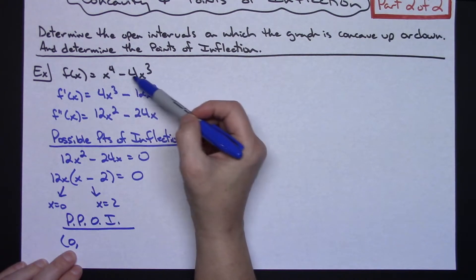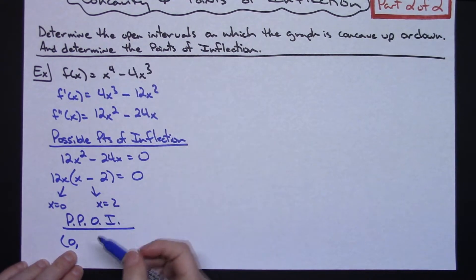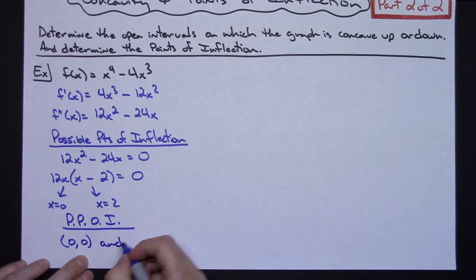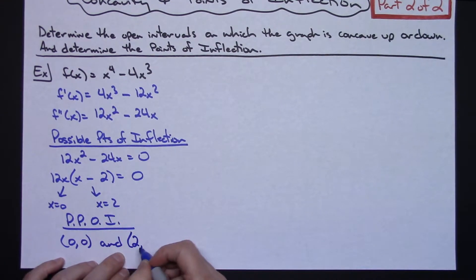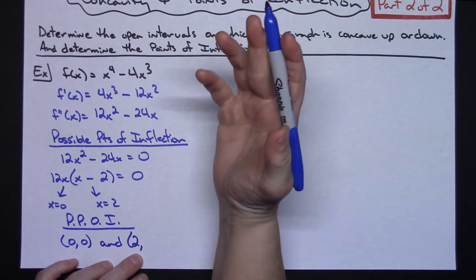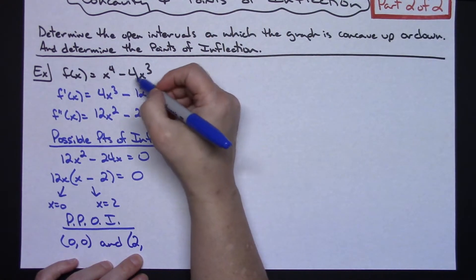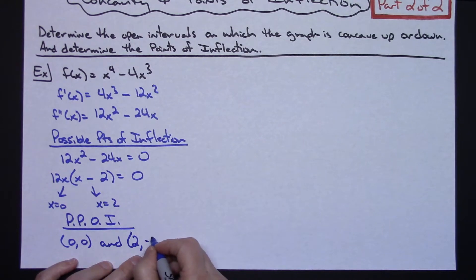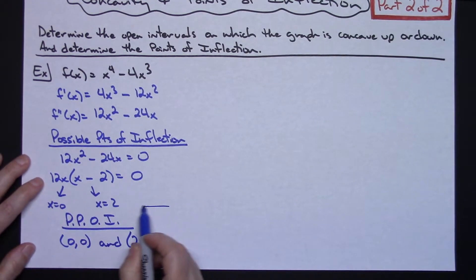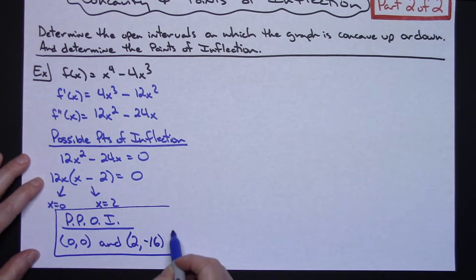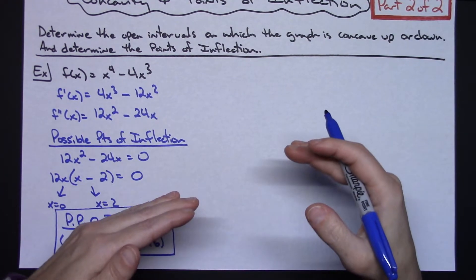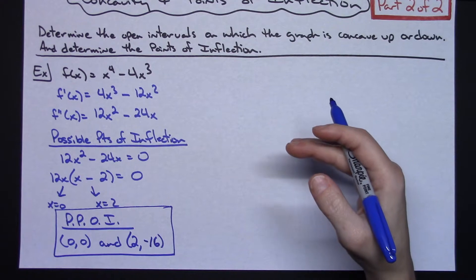For x equals zero, we plug it back into the original curve, which gives us zero, so that point is (0, 0). Then we take x equals 2 and plug it back into the original equation — you might need a calculator — and it turns out to be negative 16, giving the point (2, -16). These are technically still just possible points of inflection.